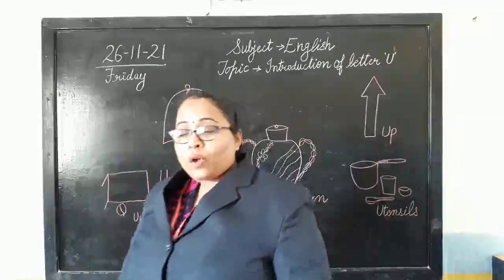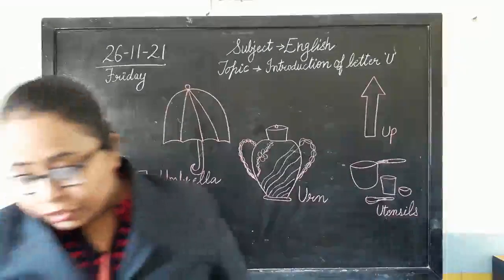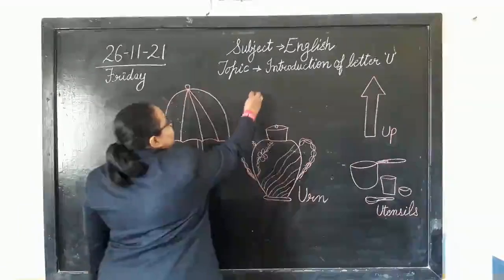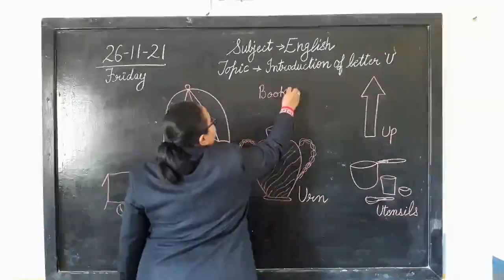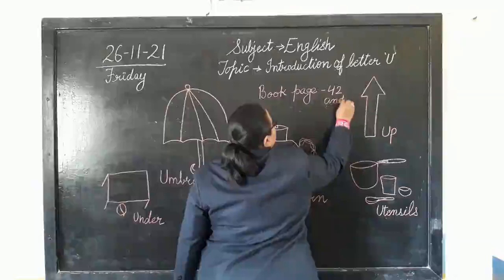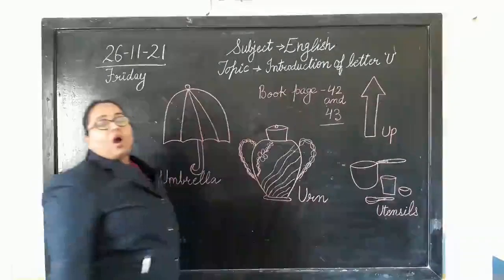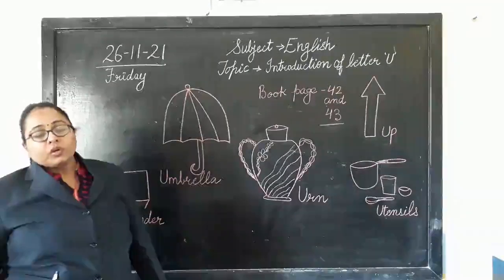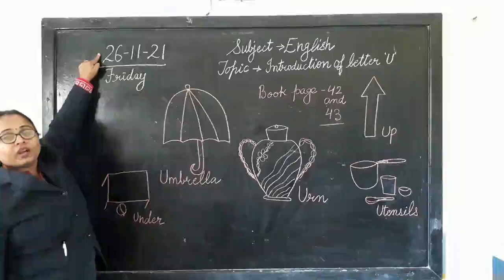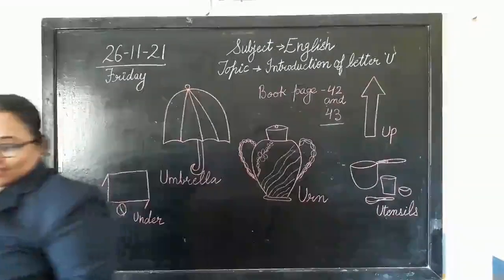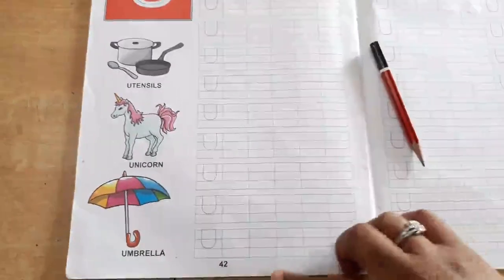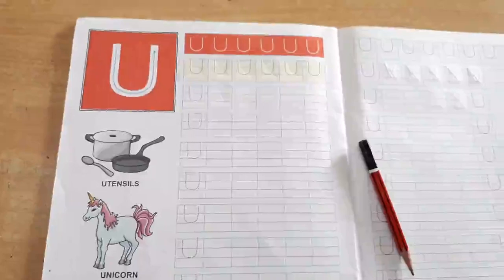Now let's see how we are going to write this letter. Open your books to page number 42 and 43. Today we are going to do our work on these two pages of your alphabet book. Quickly open your book and don't forget to write today's date — 26th November 2021. When you open page number 42, you will find your letter U.